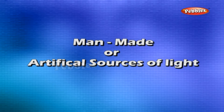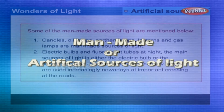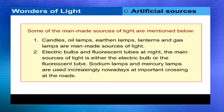Man-made or artificial sources of light include candles, oil lamps, earthen lamps, lanterns and gas lamps. Electric bulbs and fluorescent tubes are the main sources of light at night. Sodium lamps and mercury lamps are also used increasingly nowadays at important road crossings.